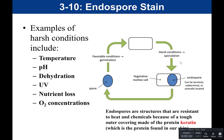Endospores are structures that are resistant to heat and chemicals because they're made of a tough outer covering made of the protein keratin — the same protein found in our skin. Our skin acts as a good barrier to keep microbes out, and most microbes can't penetrate intact skin because that keratin protein is very tough. When bacteria form endospores, they package their DNA in this tough keratin shell, allowing them to wait it out until conditions become favorable. The spore forming within the vegetative mother cell is called an endospore — 'endo' means within.